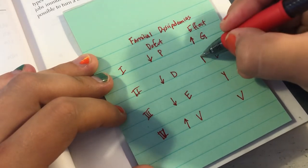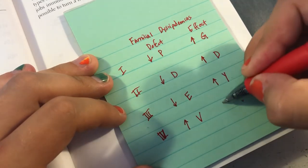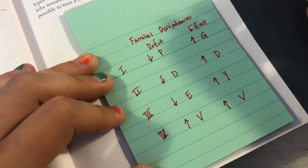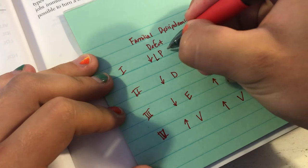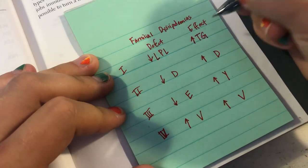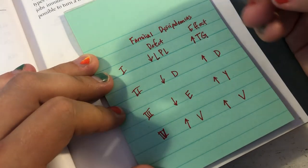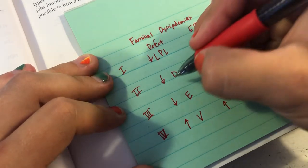So the first effect for the P is going to be decreased LPL which results in increased triglycerides in the blood. And then second is going to be decreased LDL receptor which will then result in increased LDL in the blood.